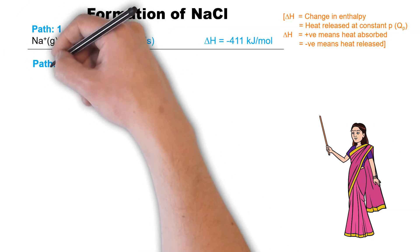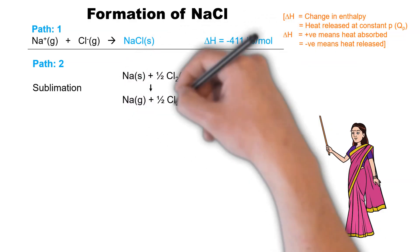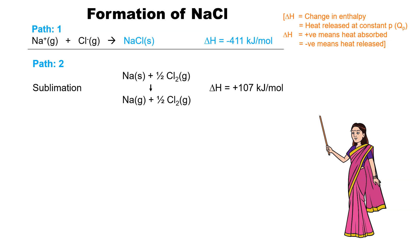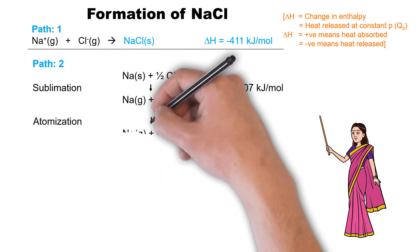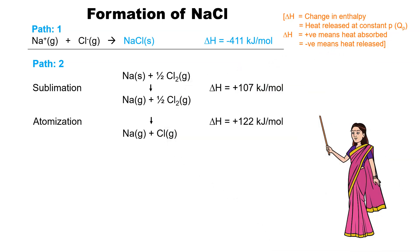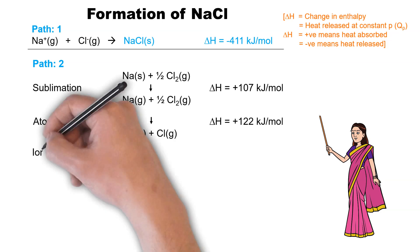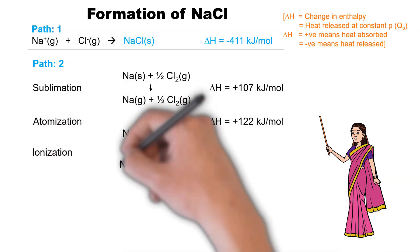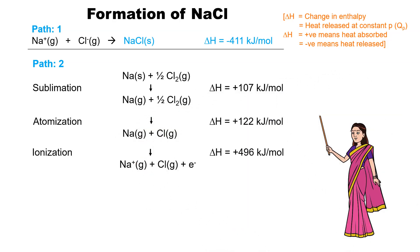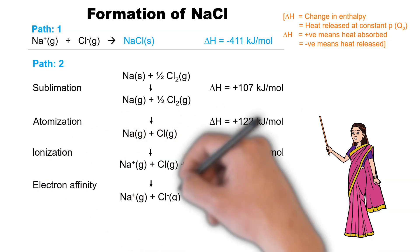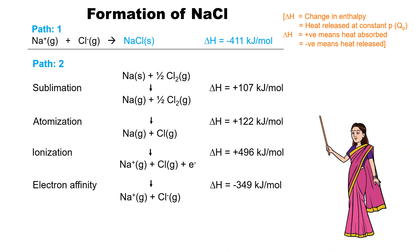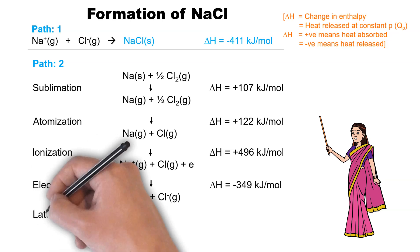Next, let's consider the same reaction in multiple steps, as indicated by path 2. The first step involves the sublimation of sodium — the conversion of solid sodium into gaseous sodium atom — which absorbs heat energy of 107 kilojoule per mole. The second step involves atomization, in which molecular chlorine is converted into chlorine atoms, absorbing 122 kilojoule per mole. The third step, the ionization of the gaseous sodium atom into the gaseous sodium ion, absorbs 496 kilojoule per mole. The fourth step is the electron affinity of the gaseous chlorine atom to become the gaseous chlorine ion; in contrast to the above three steps, this reaction releases heat energy of 349 kilojoule per mole.